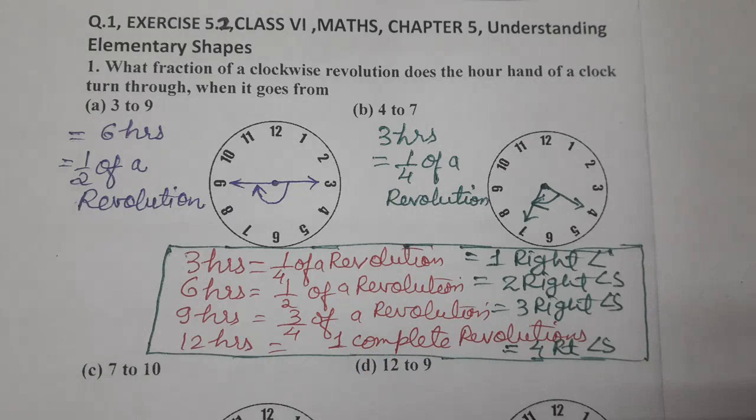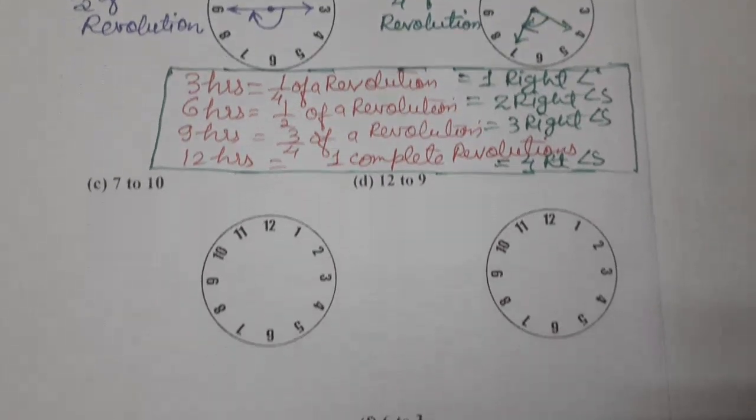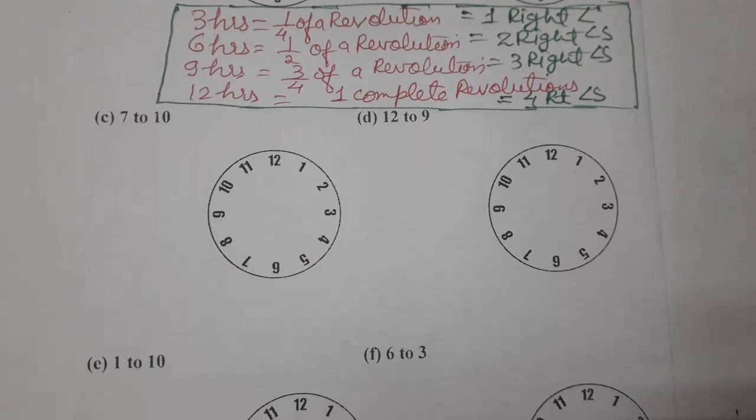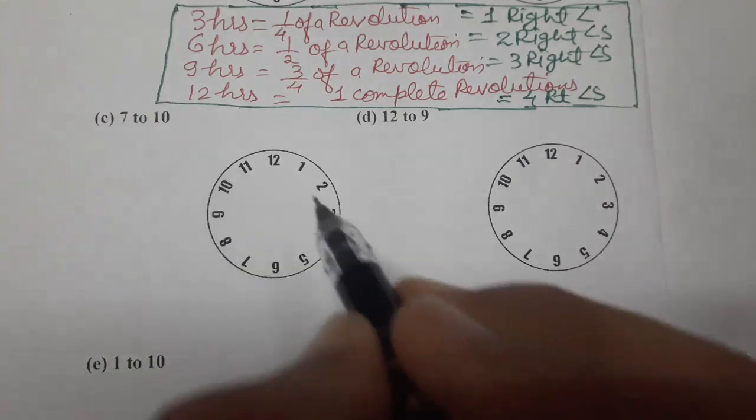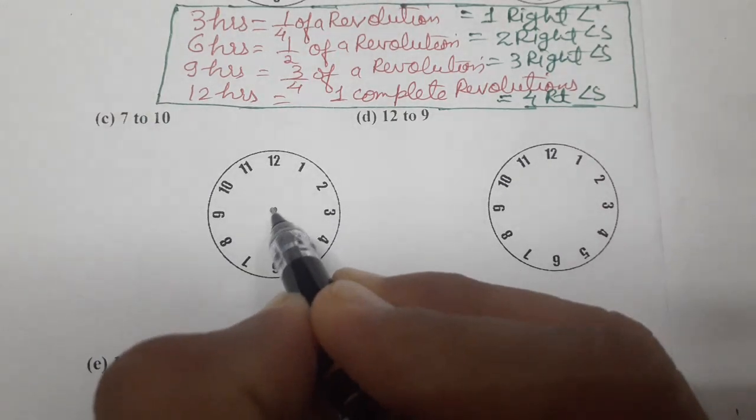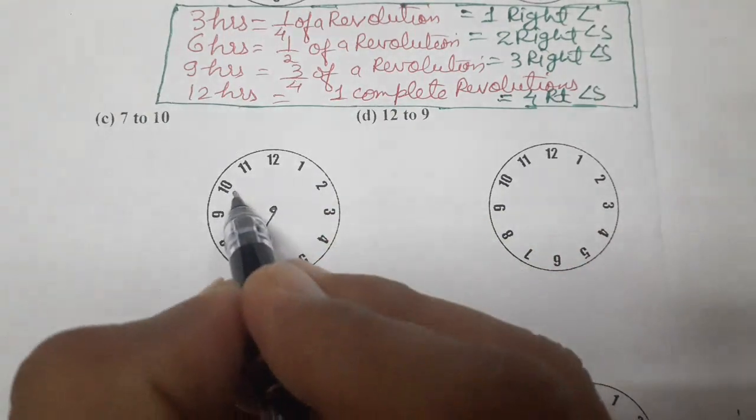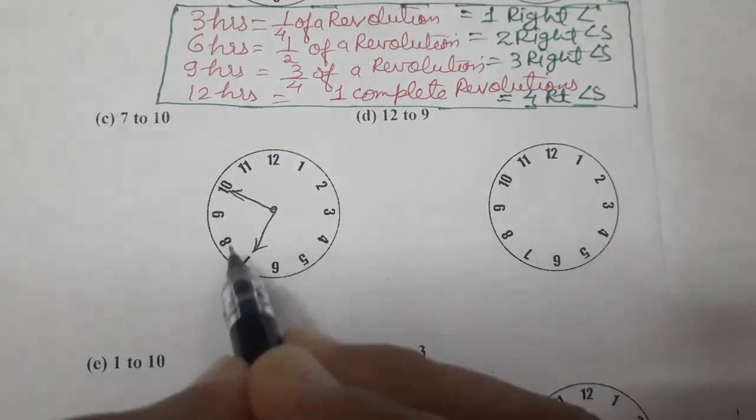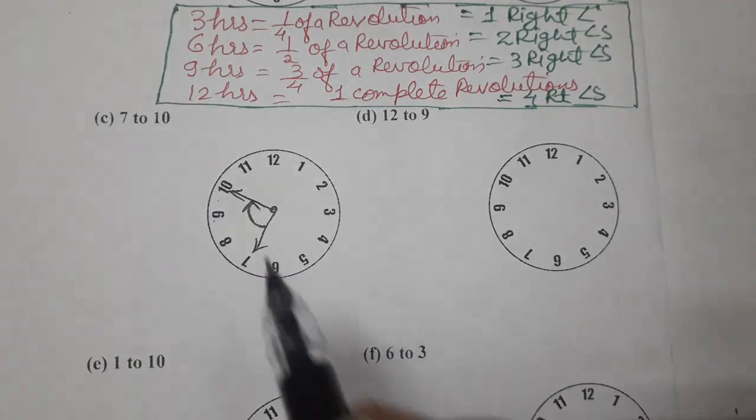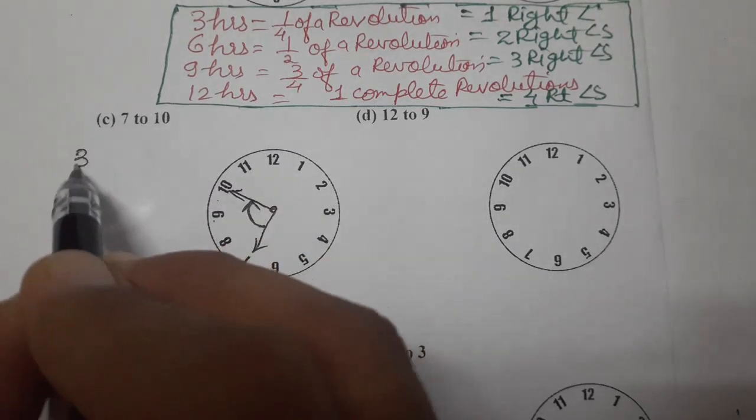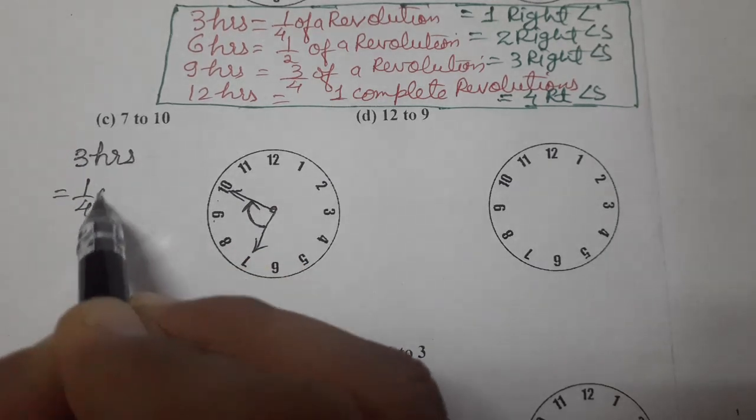Now, let's move to the third one. C1. See the third one now. 7 to 10. 7. Where is 7? 7 is here. 10. 10 is here. See. So, 1, 2, 3. Again, 3 hours. So, for 3 hours, we will write. What will write for 3 hours? It is 1 fourth of a revolution.